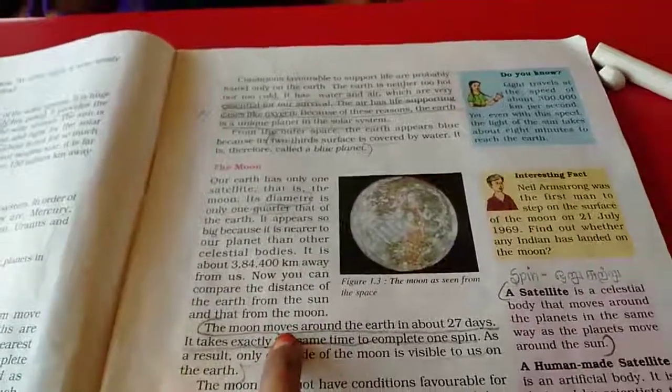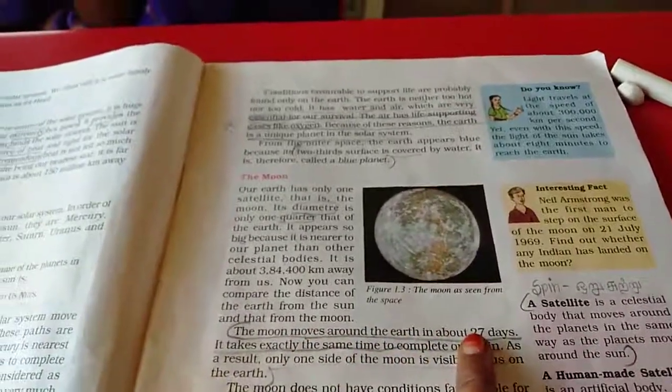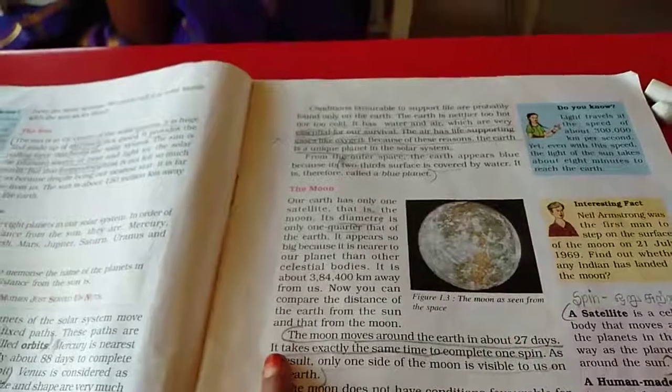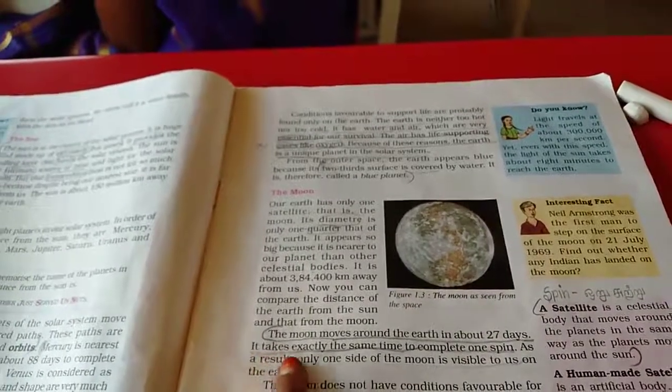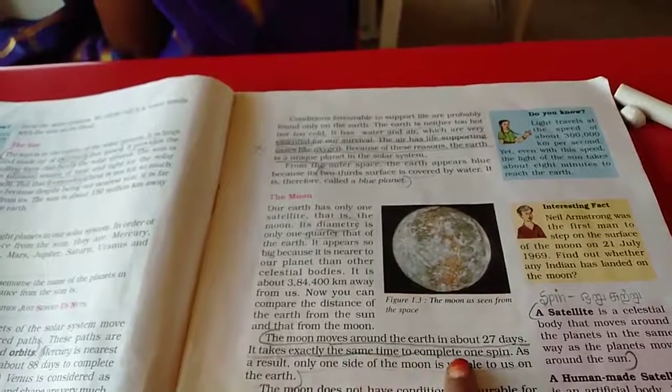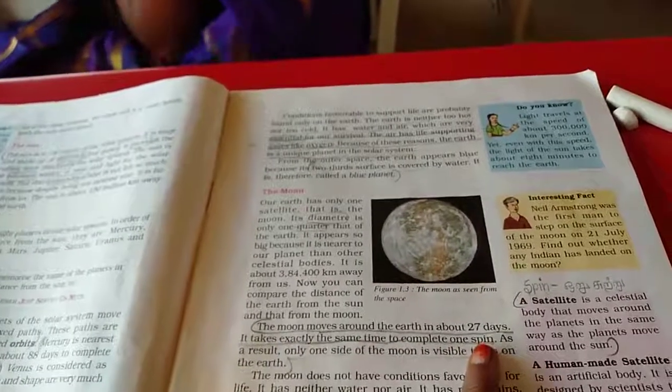The moon moves around the earth in about 27 days. How many days it's taken? 27 days. It takes exactly the same time to complete the one spin.